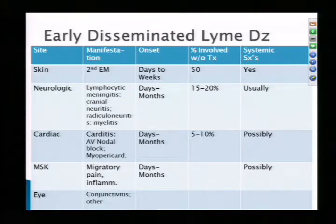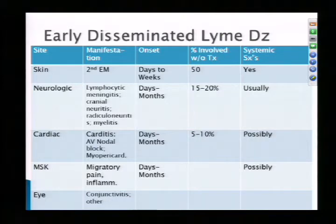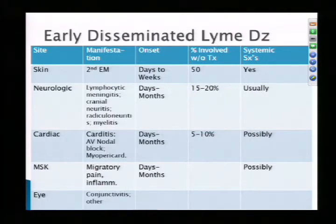Another manifestation is cardiac disease. Patients can have carditis manifesting as AV nodal block or myopericarditis. Onset is days to months after acquisition of infection. About 5% to 10% of untreated patients develop this complication, and systemic symptoms may or may not be present. Musculoskeletal manifestations are also present, classically as migratory pain and inflammation affecting joints, with onset days to months out. Patients may also have conjunctivitis or other eye disease.